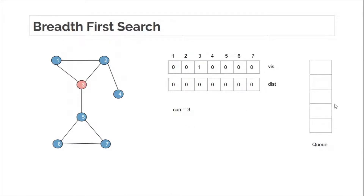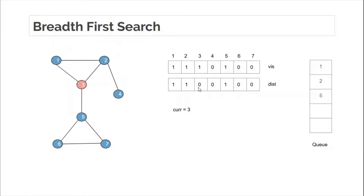Current node 3 is at level 0. Node 3 adds all adjacent unvisited nodes: 1, 2, and 5. We mark them as visited, insert them into the queue, and save their distances as distance of current node plus 1. Since distance of 3 is 0, distance of 1, 2, and 5 is 0 + 1 = 1.